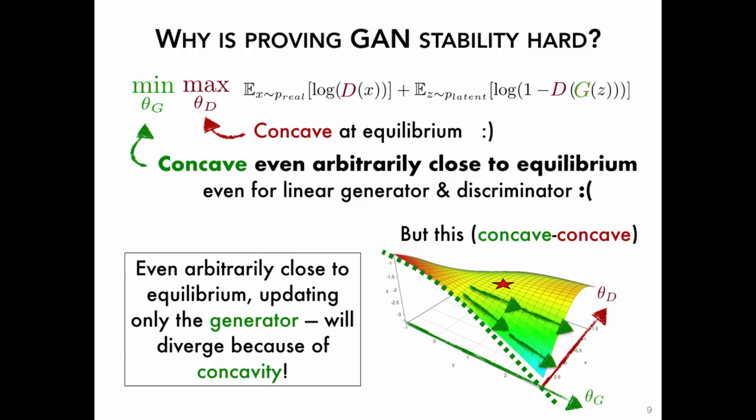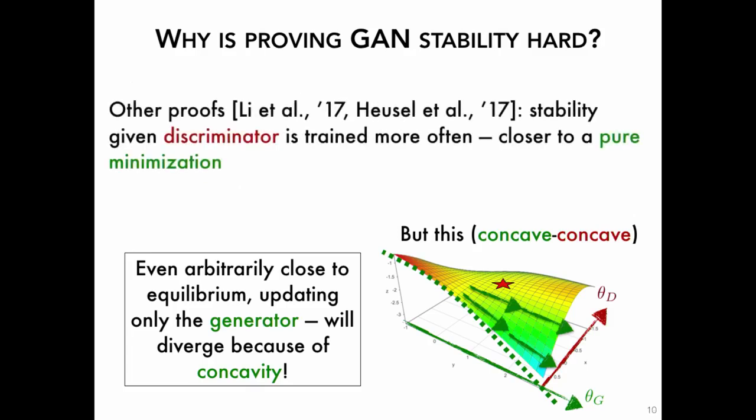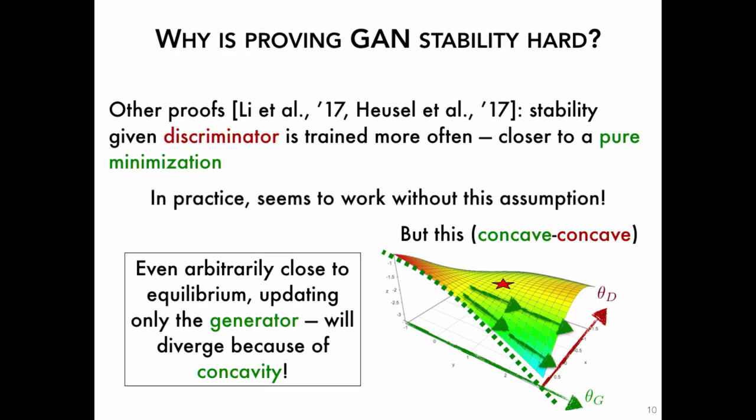Most concurrent works prove stability for GANs by considering an optimization procedure where the discriminator is trained more often than the generator, essentially converting it to a pure minimization problem. However, this does not echo what we do in practice, which is to update the discriminator and generator at the same frequency. We know that even such an algorithm works. So let's consider GAN optimization where at each time step we update the generator and discriminator simultaneously and infinitesimally, giving us a differential equation or a nonlinear system. This is closer to what is done in practice and is also computationally cheaper.